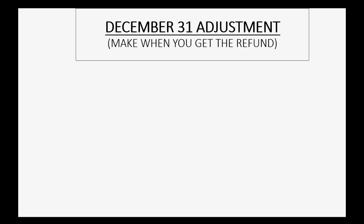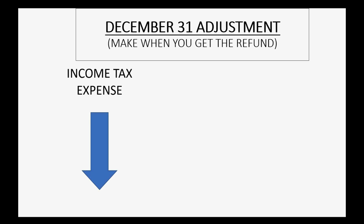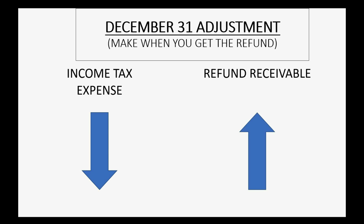We are now ready to record the adjustment. This adjustment is dated December 31st of 2016, but you will record it on the day that you receive the refund information in 2017. This adjustment will decrease your 2016 income tax expense by the amount of the refund, making it the actual amount of income tax expense for the year. At the same time, your books should reflect that you will receive money owed to you from the government. So the December 31st adjustment makes income tax expense go down and Refund Receivable go up.